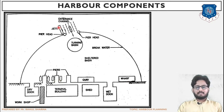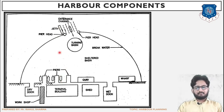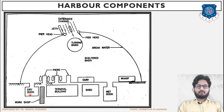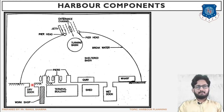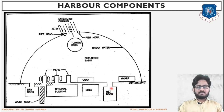The difference between jetty and pier is that piers can handle heavy tonnage cargo compared to the jetty. Next are the dry dock and wet dock. Dry docks are provided for carrying out repair or maintenance work, and in this portion lock gates are provided to retain the water. Wet dock allows the passage of water; basically here the loading and unloading of cargo can be carried out.